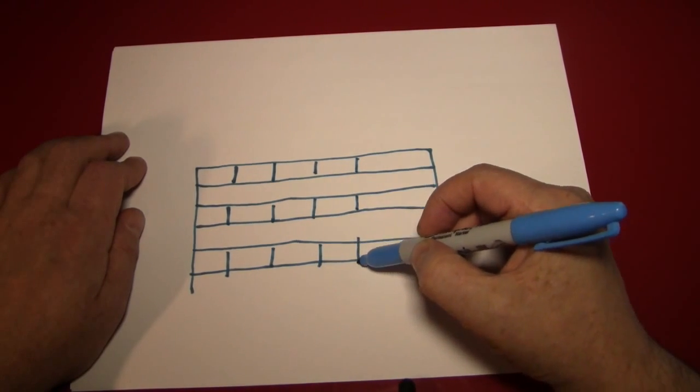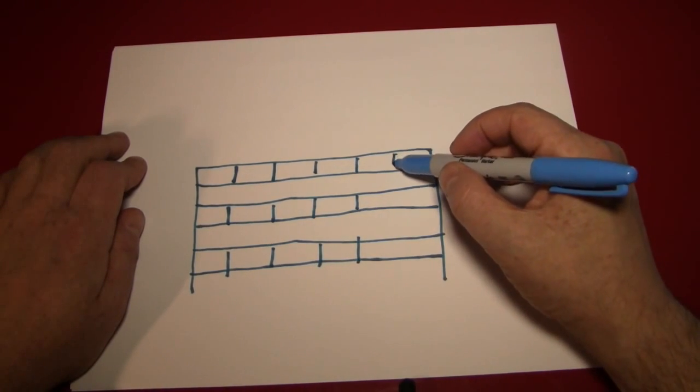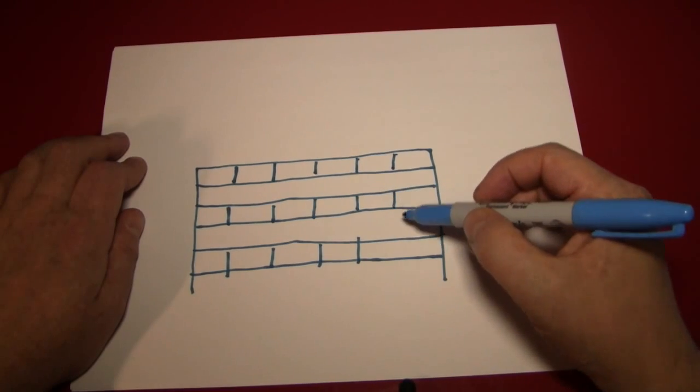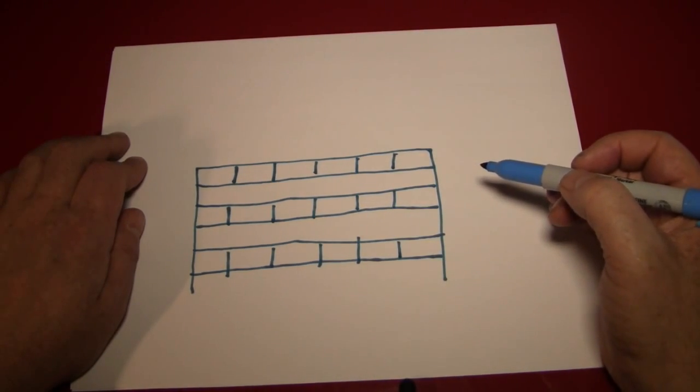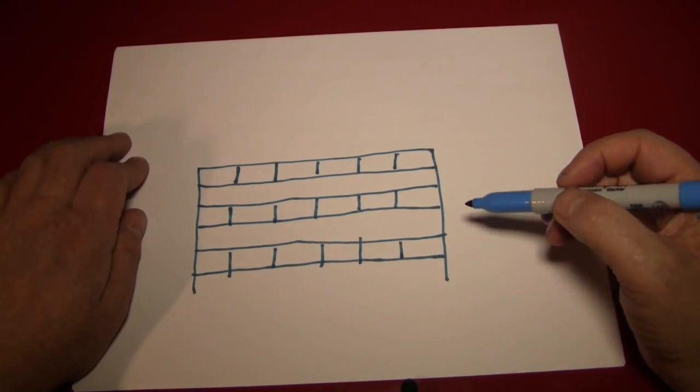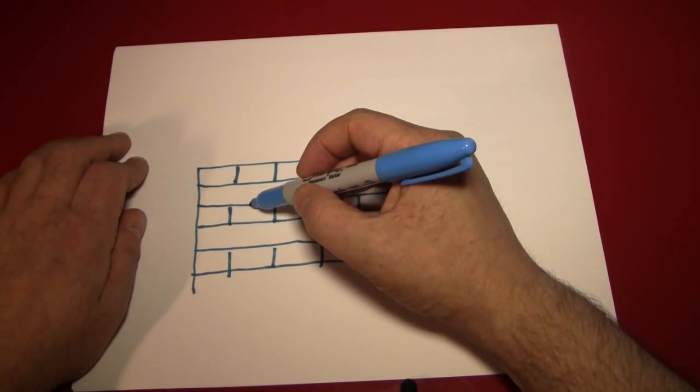And don't worry if this isn't perfect, especially if your brick wall has loads and loads of rows. It can look quite nice if the pattern is a little bit off, as ours will be, I guarantee it.